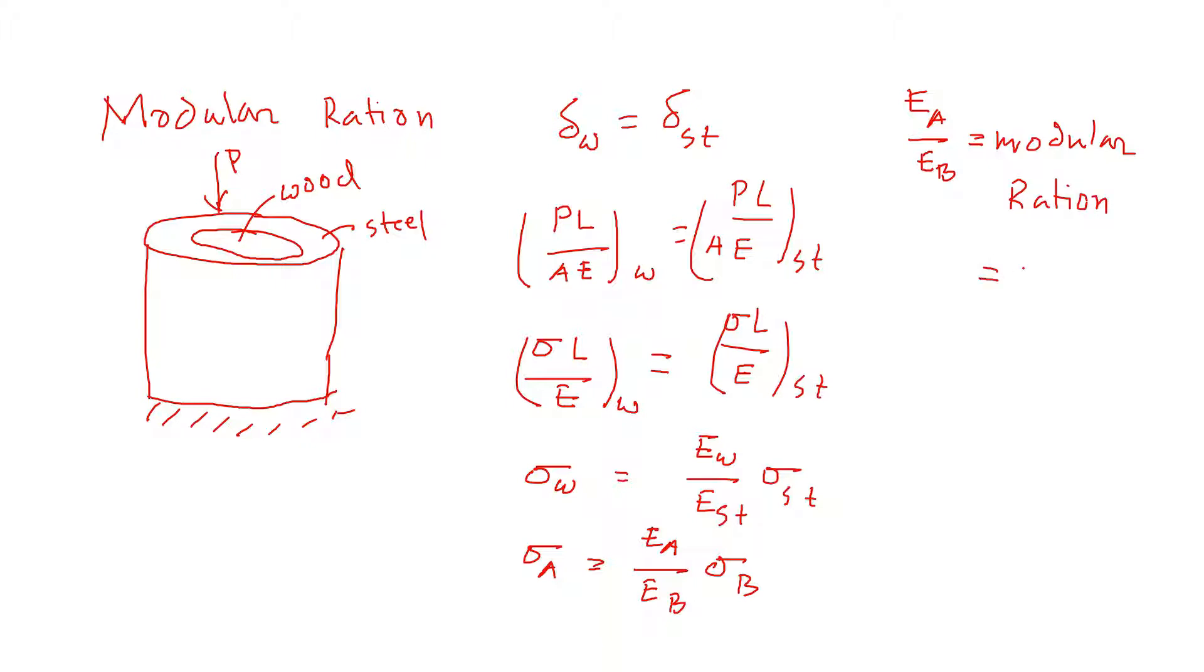Sometimes it is expressed by N. So we can write something like sigma A is equal to N sigma B. So we may have to use this equation.